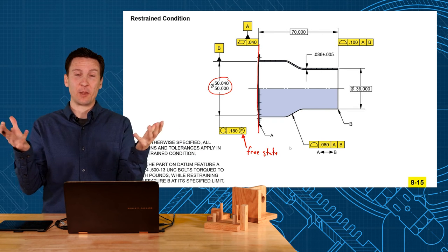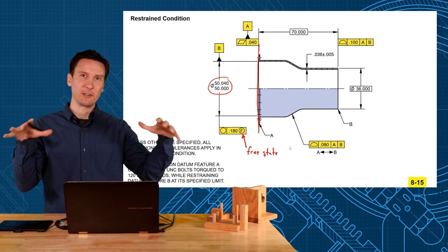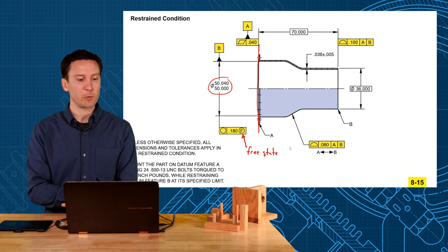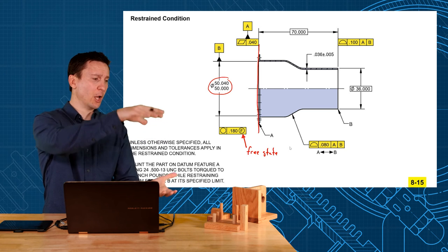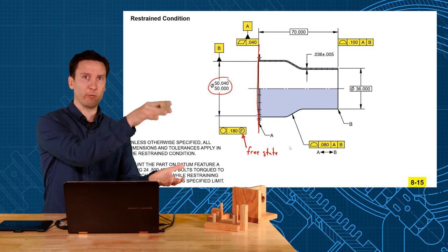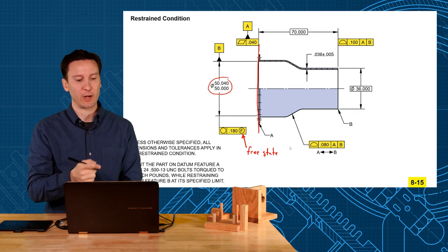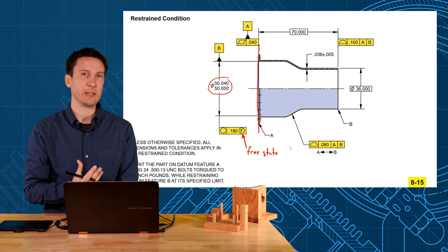So our default is free state, but then when you put the note on, it locks everything down. But then you might want to unlock a few things here. So we want to make sure when you initially bring the part to the inspection, when we put it down, it can't be too oval because now it's taking too much force to bring it back to shape. So we have a circularity requirement of 180,000 in the free state.